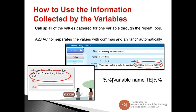You can call up all of the values gathered for one variable through the repeat loop. A to J Author will separate those values with a comma and automatically add 'and' at the end. For example, if the end user entered four children's names as Jane, Ann, John, and Jim, you can use them in the next question outside the loop, like 'Who would you like to make the guardian of those children?' The variable macro to include all values collected for that variable is: %% [variable name] %% — percent sign, percent sign, open bracket, variable name, close bracket, percent sign, percent sign.